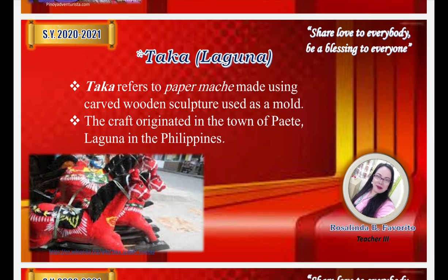Next is Taka in Laguna. Taka refers to paper mache made using a carved wooden sculpture as a mold. The craft originated in the town of Paete, Laguna in the Philippines, well known as the carving capital of the Philippines. A carved wooden sculpture is used as a mold in making Taka. Brown kraft paper is used as a final layer for Taka made for export, providing a thicker base and smoother finish.